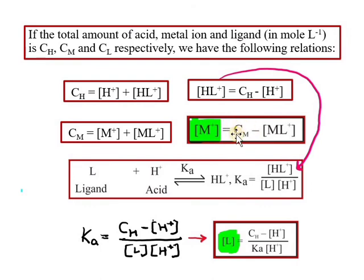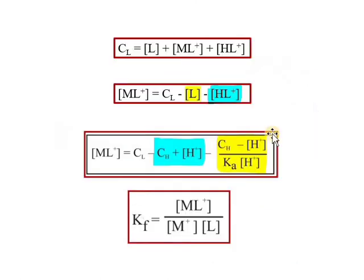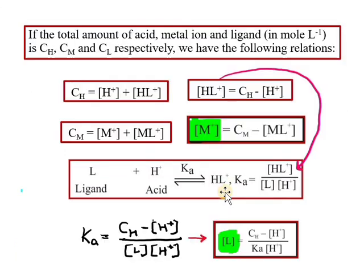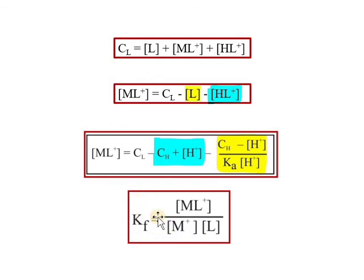We need CM, and M+ equals CM minus ML+. For L, we compute it using CL, H+ concentration, and KA. For HL+, we use CH and H+ measured from the pH meter. KA is the known formation constant for the acid. This is the pH-metry or potentiometry method — we determine the formation constant under competitive conditions between H+ ions and metal ions.